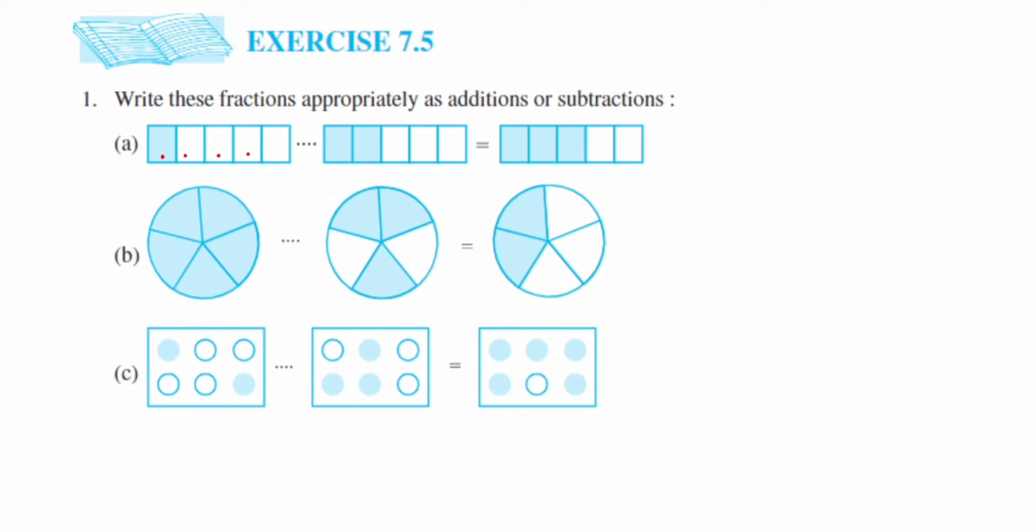With five equal parts, and the shaded portion is only one, so the fraction will be one upon five. Look at the second one, it's the same thing. We have five equal parts but two shaded portions, it's two upon five. And the third one they have given three shaded portions, so it's three upon five.